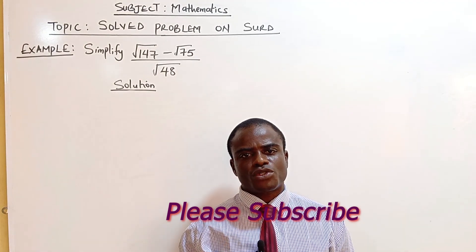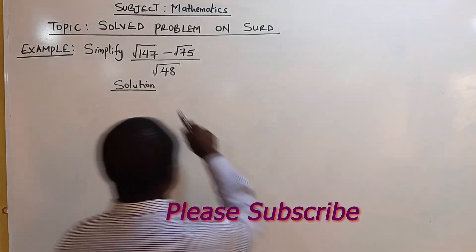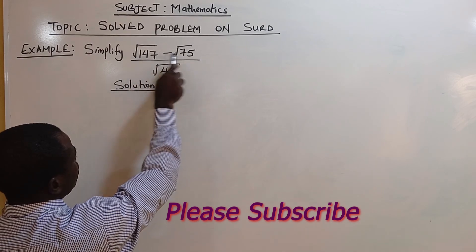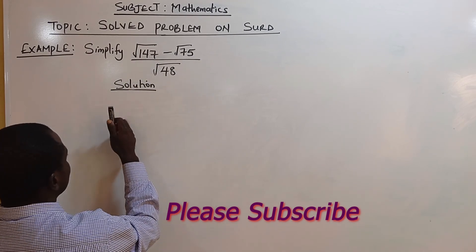Good day students, today I want to solve a problem. You will notice that square root of 48 is common to both square root of 147 and square root of 75.